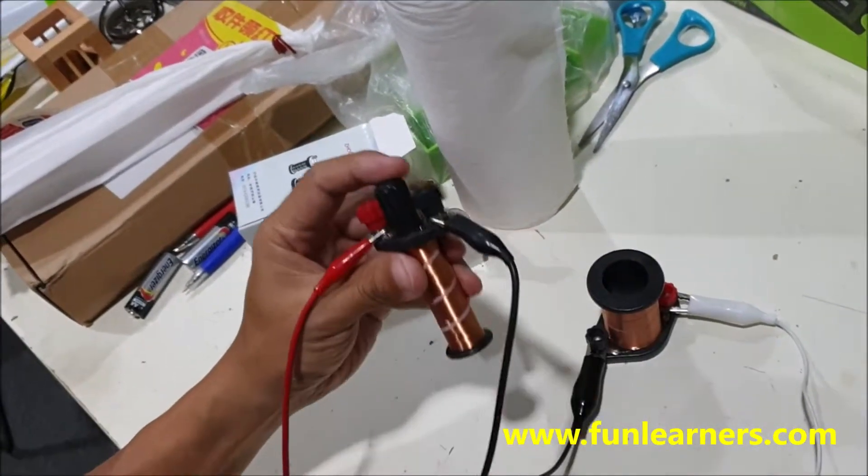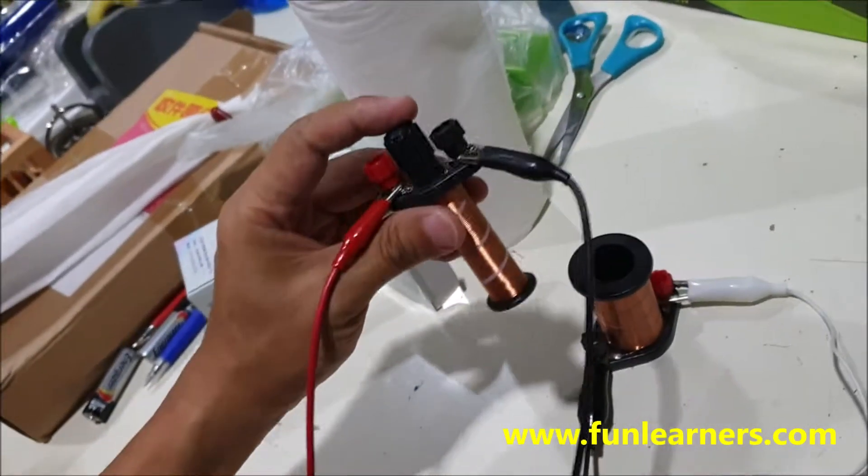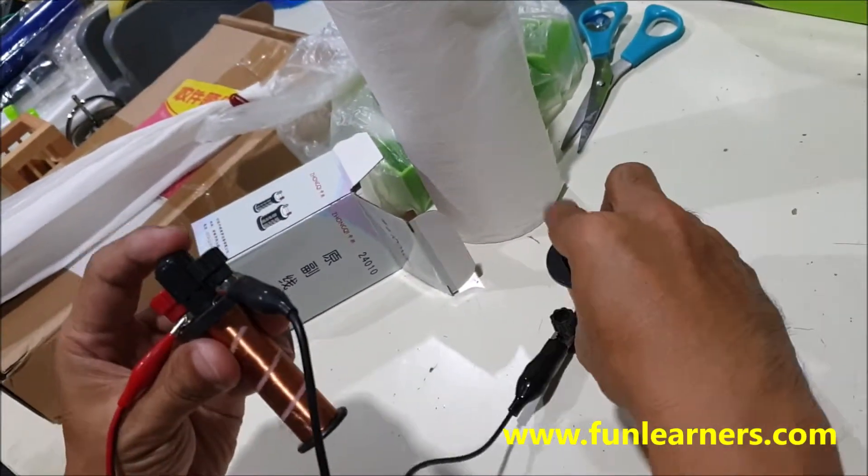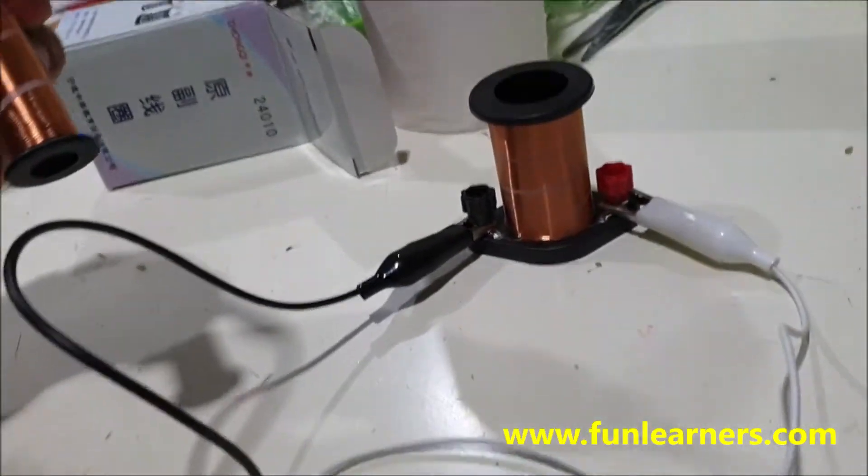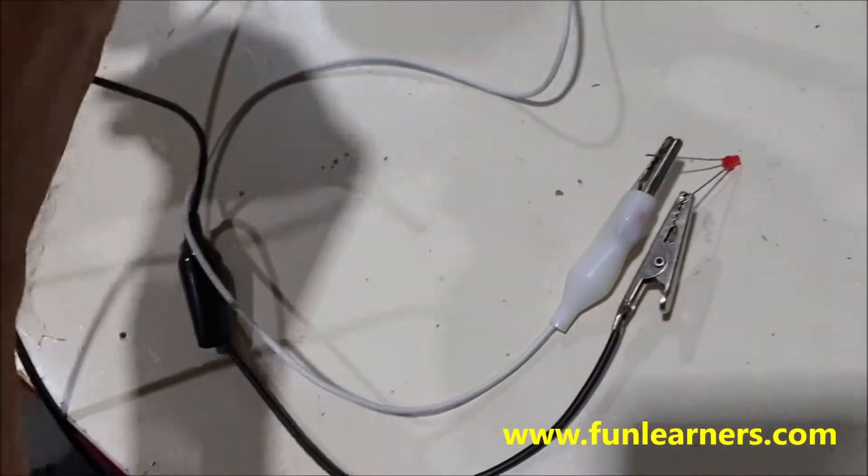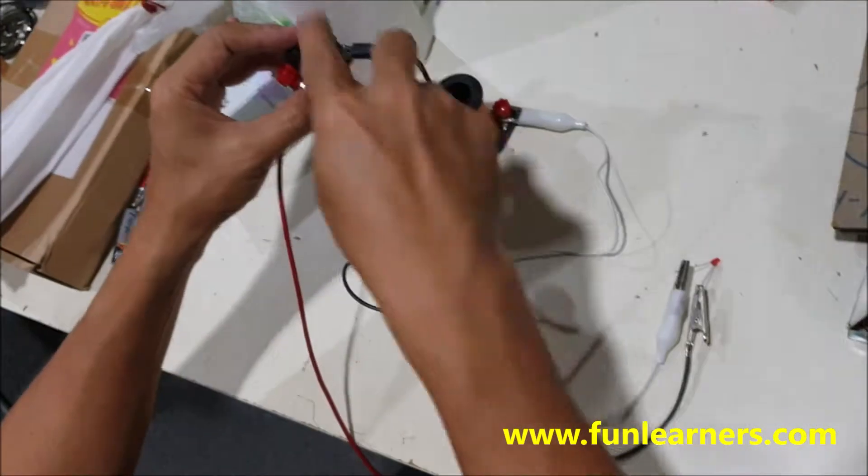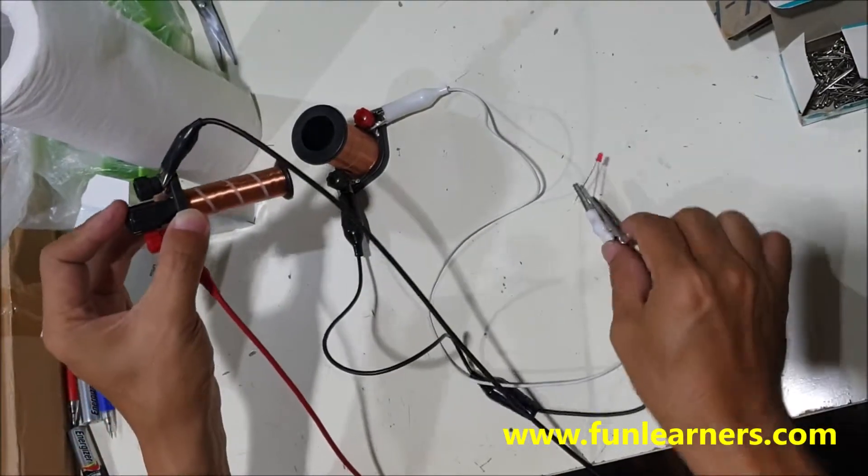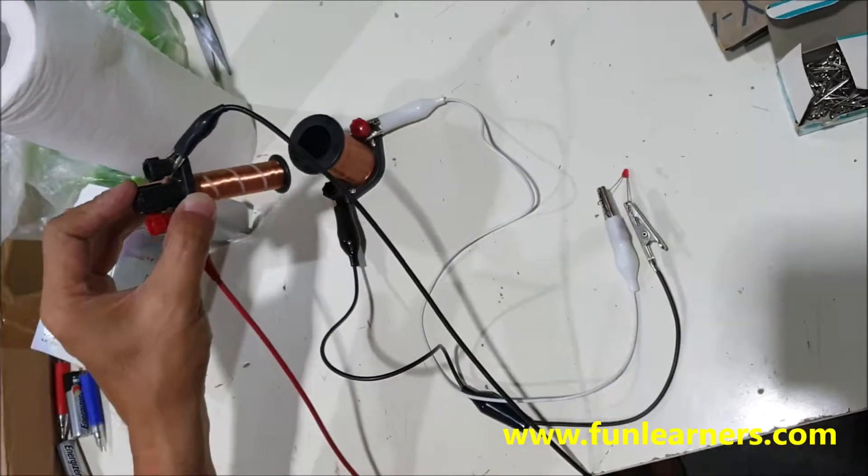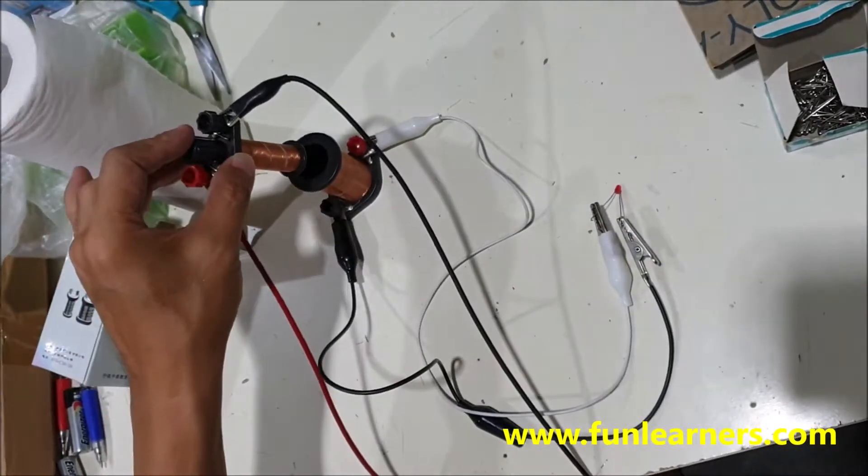When we switch on AC, this secondary coil is connected to an LED. There will be a magnetic field based on Faraday's law, inducing an EMF to light up the LED. This basically works like a transformer. Now power on.